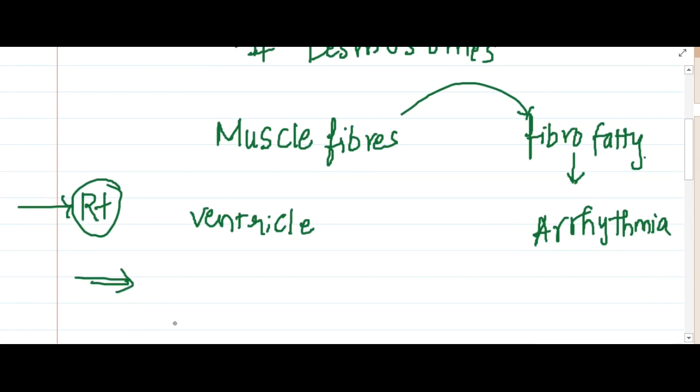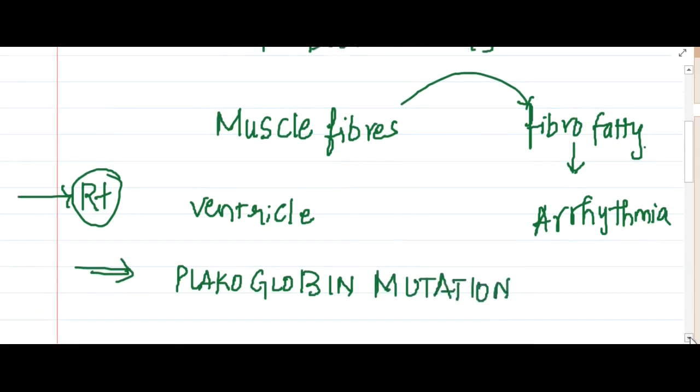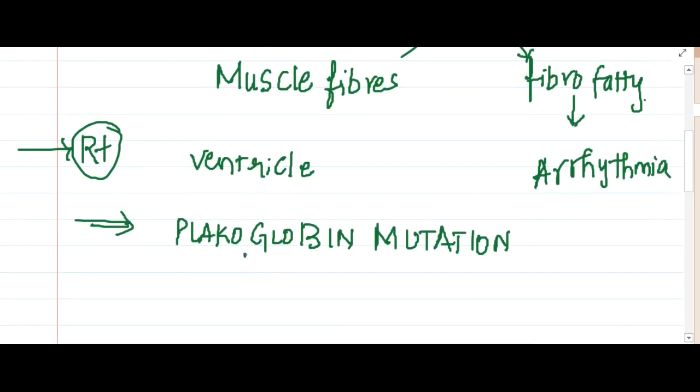Here, if you see, you will see presence of a mutation which is called placoglobin mutation. And this placoglobin mutation, which is seen in this arrhythmogenic right ventricular failure, is associated with a syndrome called Naxos syndrome.